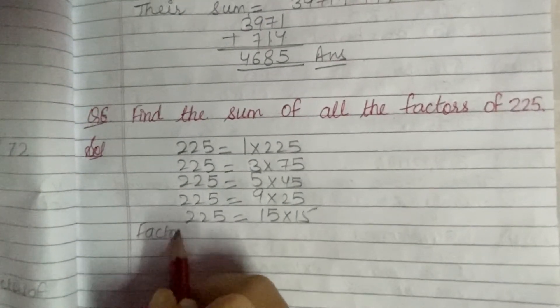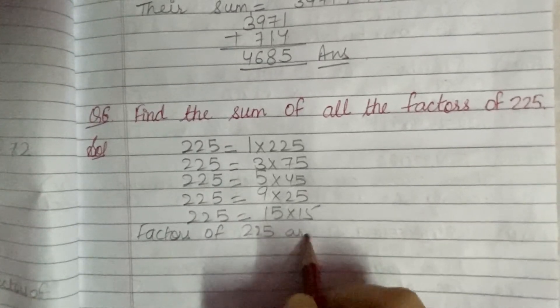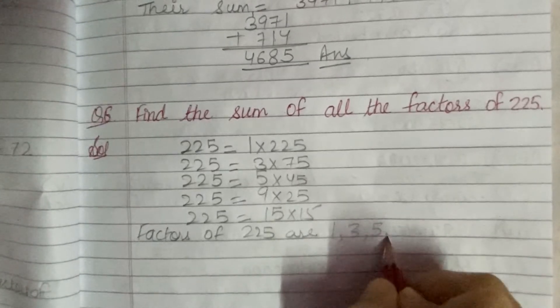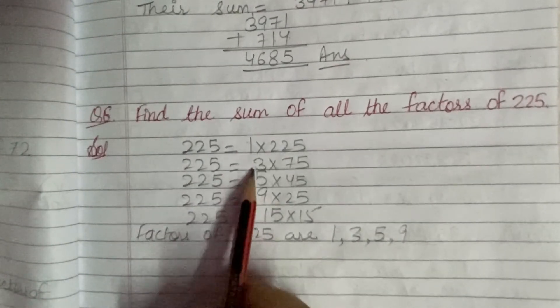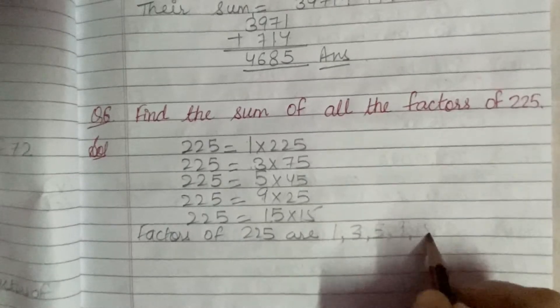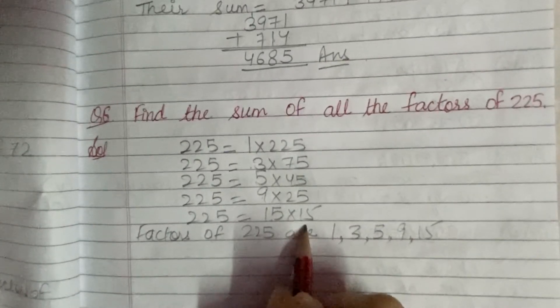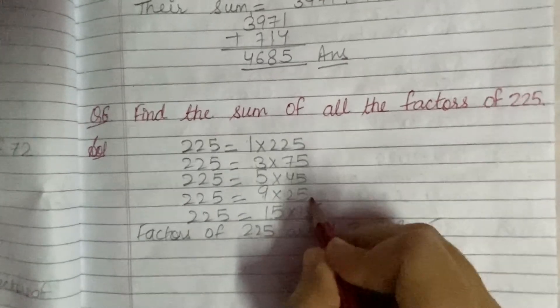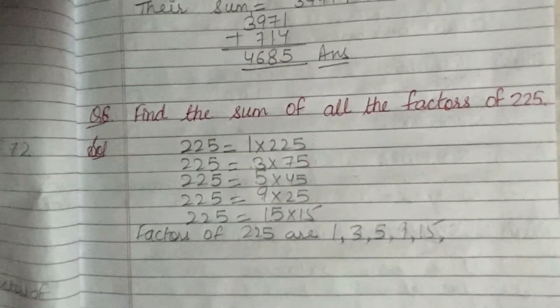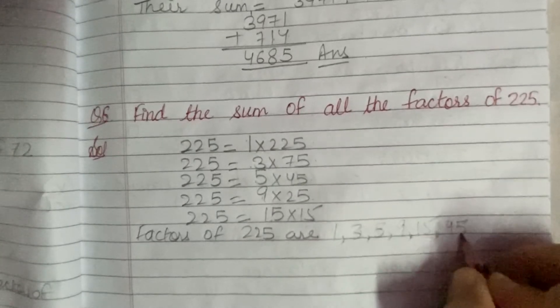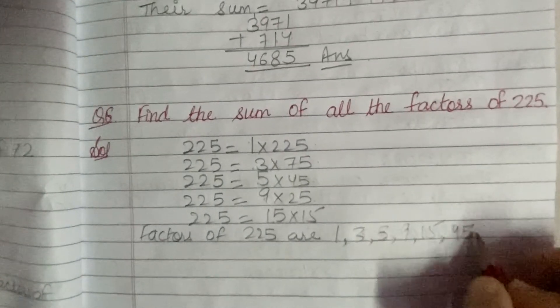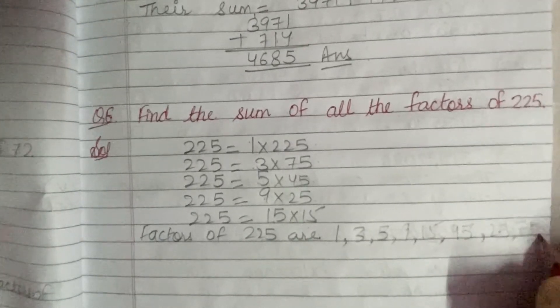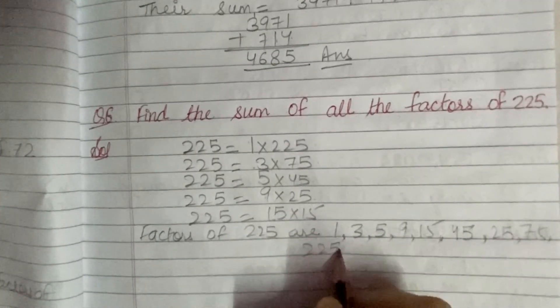Factors of 225 are 1, 3, 5, 9. Now 15 is again there, it is repeated, so move like this. After 15: 25, 45. I have missed 25, so I am writing it here. Then 75 and 225.